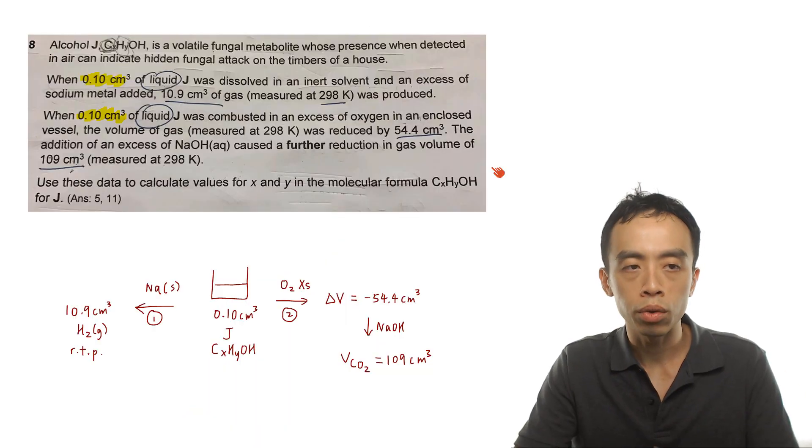This question involves an alcohol J, and the molecular formula for alcohol J is not known, so it is given in terms of CxHyOH. The question gives us some information involving alcohol J with some reactions and outcomes. We want to make use of this data to determine the values of X and Y, and ultimately determine the molecular formula for alcohol J. This question is a little bit interesting because it is tedious and not straightforward, so some of us may have difficulty answering it.